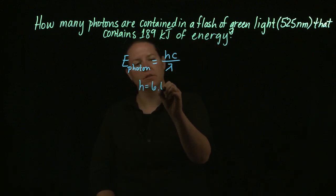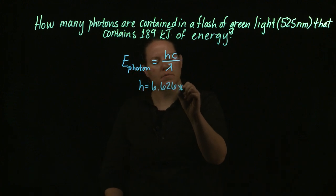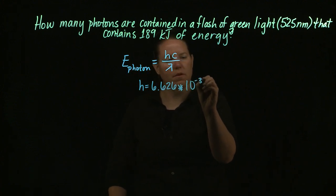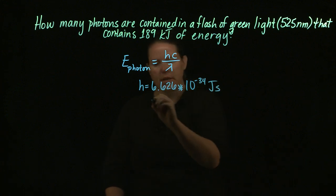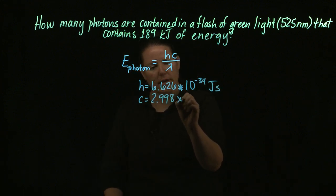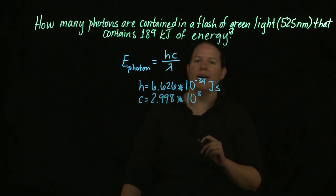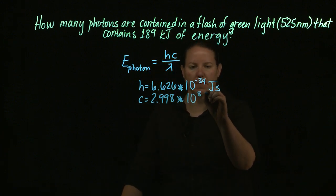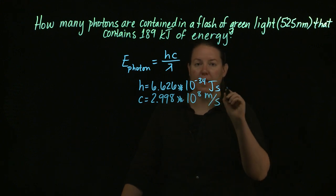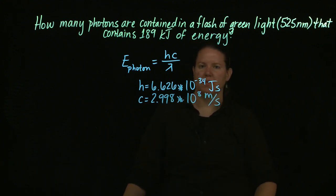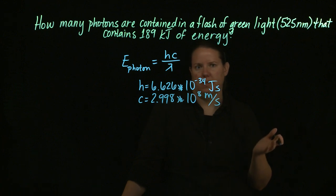So h equals 6.626 times 10 to the negative 34th joules times seconds. c is equal to the speed of light, 2.998 times 10 to the negative 8. That's a way positive number, by the way. It's positive 8. It's a big number, speed of light, which you would expect because it's hard to overcome.